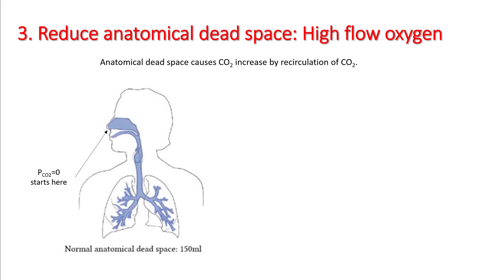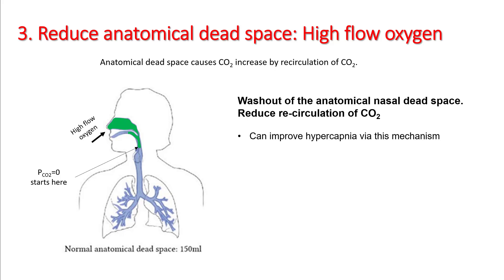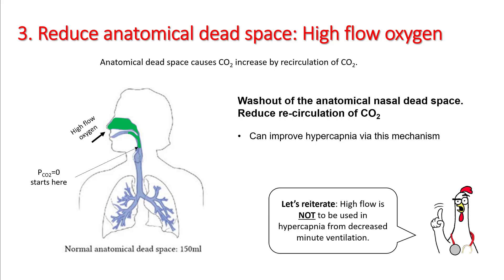Anatomical dead space causes increased CO2 by increasing recirculation of exhaled air, which is rich in carbon dioxide. If you use high flow, you should be able to remove the exhaled CO2-rich air and replace it with air very low in carbon dioxide, so your anatomical dead space decreases and you can improve hypercapnia by this mechanism. One important point: high flow is not to be used in hypercapnia from decreased minute ventilation.